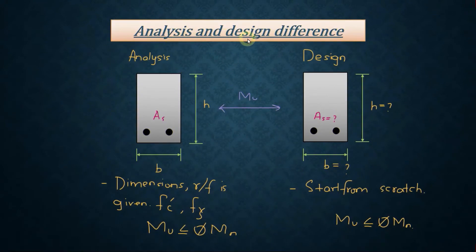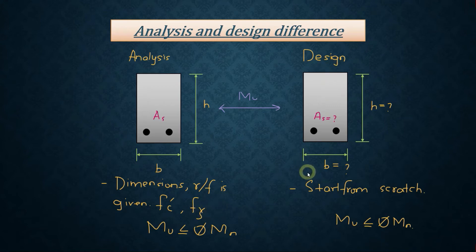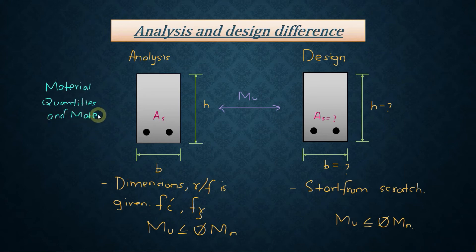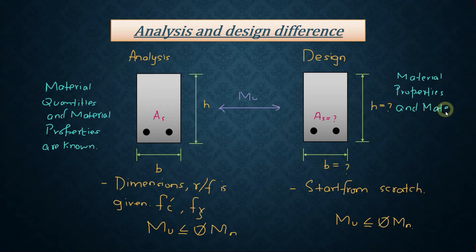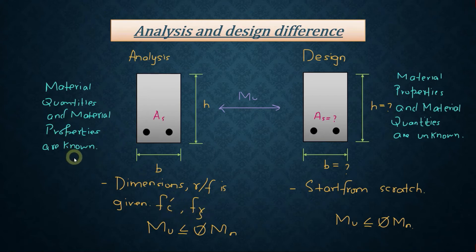The difference between analysis and design of a reinforced concrete member is as follows. In analysis, the dimensions and reinforcement details are given, along with material properties such as Fc' (compressive strength of concrete) and Fy (yield strength of steel). In design, we start from scratch — we do not know the width, height, or dimensions of the section, nor the area of steel. When material quantities and material properties are unknown, it is a design problem.